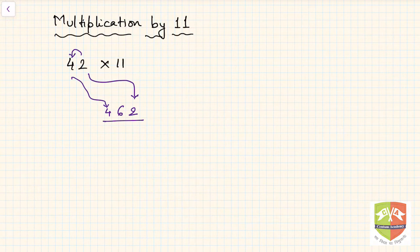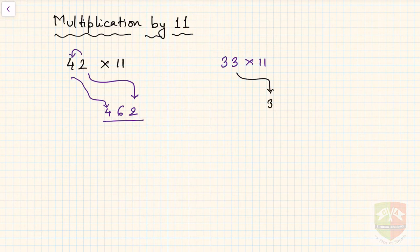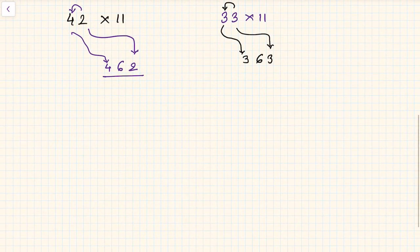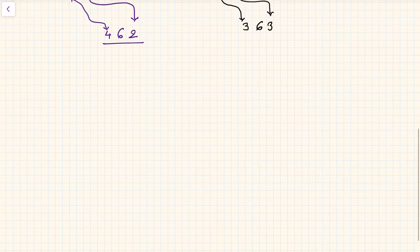Let us take another example: 33 multiplied by 11. Write the units digit 3 first on the right, then add 3 plus 3 to get 6, and then the leading 3 goes on the left. So 363 is the answer.